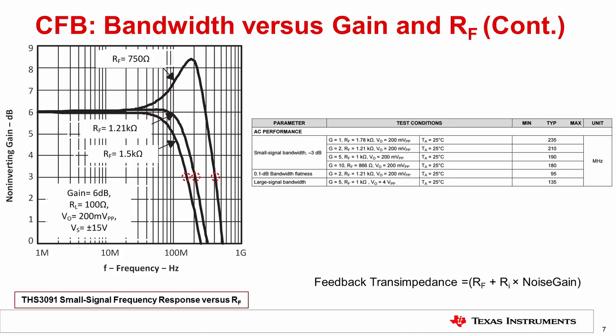This figure shows the small signal frequency response of the THS3091 when the gain is kept constant and the feedback resistance is varied. The nominal feedback resistance is 1.21 kΩ. With a smaller value of RF, the feedback transimpedance is reduced, reducing the phase margin and increasing the bandwidth, with the reduction in phase margin apparent from the peaking in the frequency response. Similarly, when the value of RF is increased over the recommended datasheet value, the feedback transimpedance gets larger, increasing the phase margin and decreasing the bandwidth. In this manner, a current feedback op amp can be compensated for any arbitrary phase margin by changing the feedback resistance.